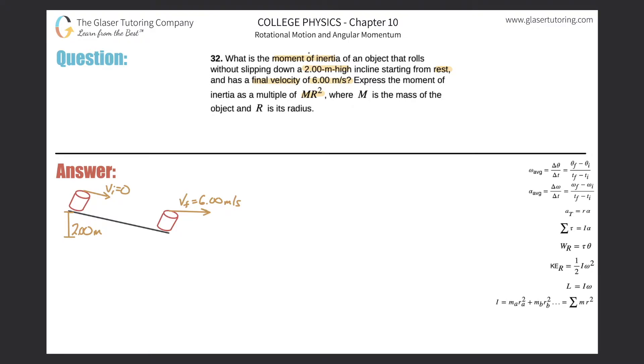We need to find the moment of inertia, I. Don't worry about expressing it as a multiple of mr² for now, just think about solving for I. The object is rotating down the hill, rolling without slipping, so anytime you hear that you got to think two things: this object will have translational kinetic energy and also energy of rotation.